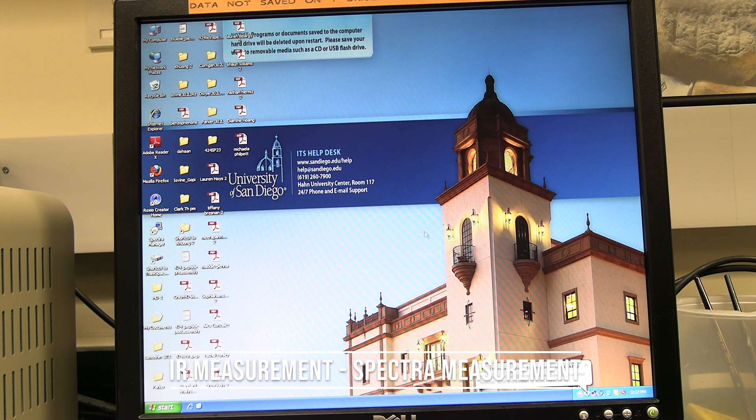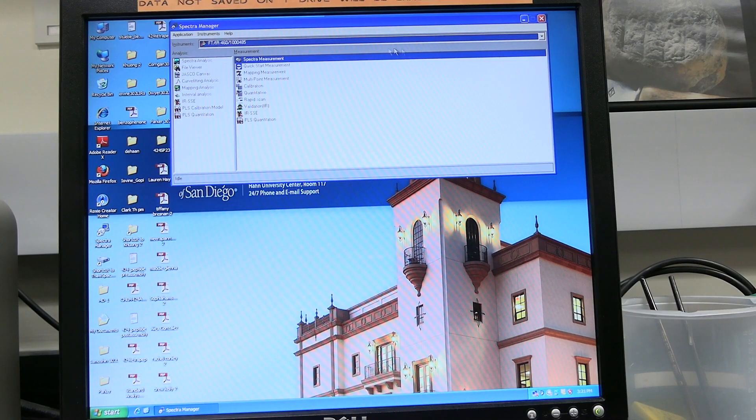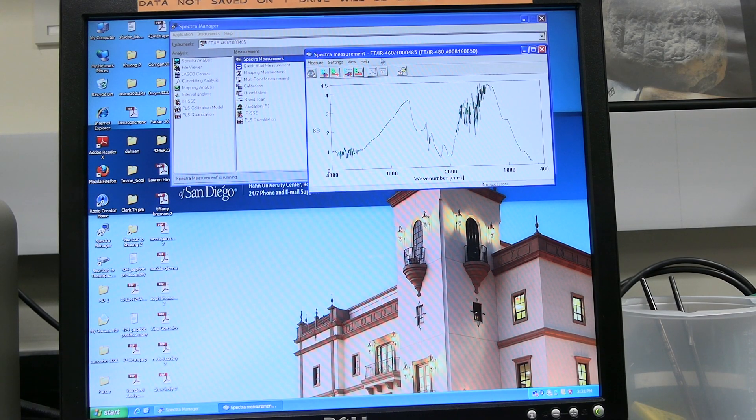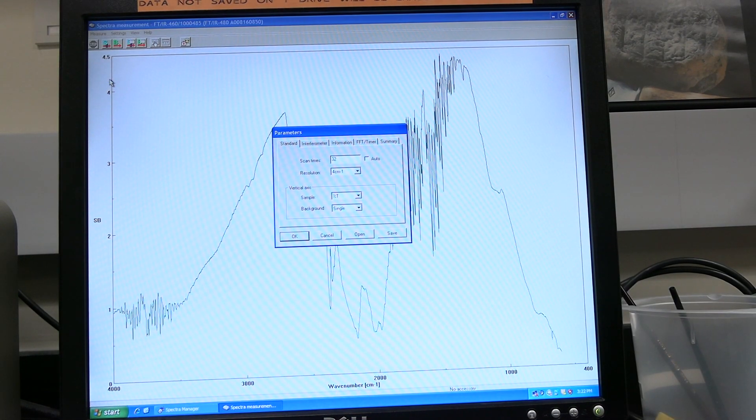IR measurement. Spectra measurement. Click on the spectra manager icon. Click on spectra measurement. Expand the spectra measurement window if needed. Click on measure and then on parameters. In the standard tab, set scan times for the number of scans. Set resolution.